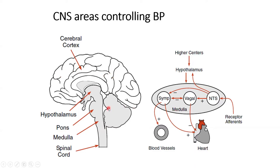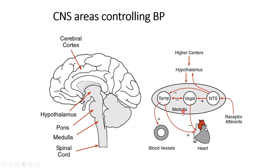Everything below the cerebral cortex is unconscious — you have no control over it. The cerebral cortex does have an effect via the hypothalamus, which controls blood pressure through the vasomotor center. So conscious changes in mood, perceived emergencies, images, sounds, and memories all have an effect on blood pressure via this input. But the day-to-day regulation is automatic — that is why it is automatic.